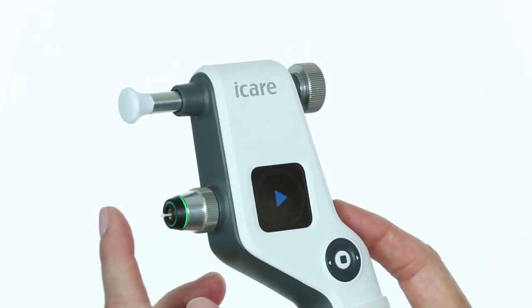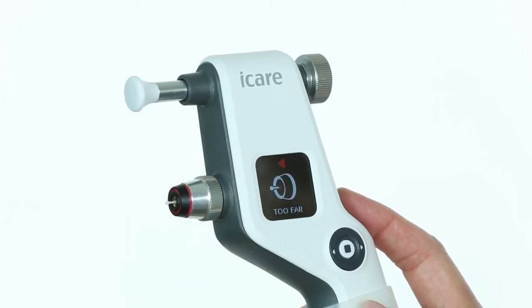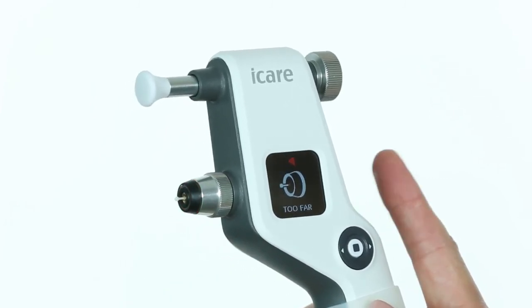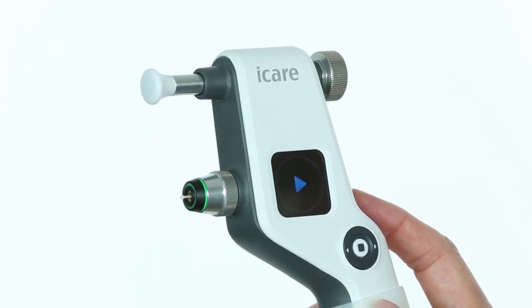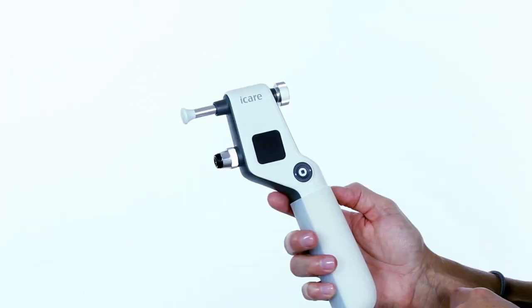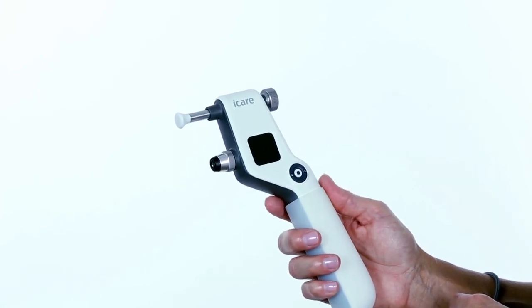If you are too far from the cornea, then too far will show in the display and the probe base light flashes red. Clear the error message, correct alignment, and continue measurement. If the tonometer is not used for three minutes, it will turn off automatically.